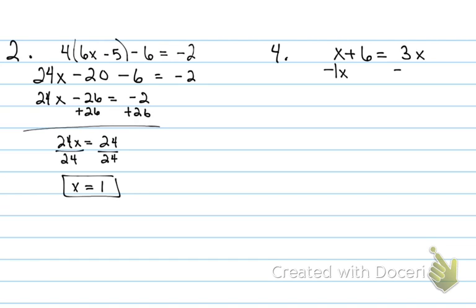I'll subtract 1x — I put a 1 there because it's understood, and if you don't write it you could easily forget it and subtract wrong. Subtracting 1x puts x's on one side and numbers on the other. What's left on the left side is just 6. On the right, three minus one is two. Dividing both sides by two gives x equals three.